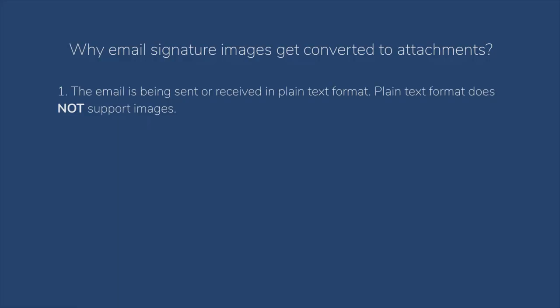What that means is: let's say you receive an email and the images are attached to the email instead of remaining in the body. Usually the reason is that the email has at some stage been converted to plain text format, and plain text format doesn't support images in the body of the email. For example, your friend sends an email using HTML format with images in their email signature, but you see those images as attachments. The reason is probably that your Outlook has converted the incoming email to plain text, or maybe their mail server converted it to plain text when sending.